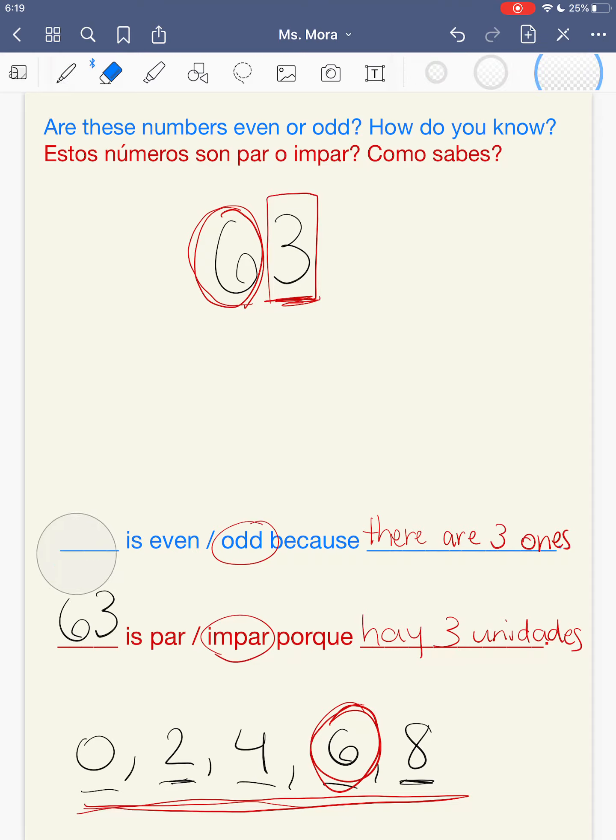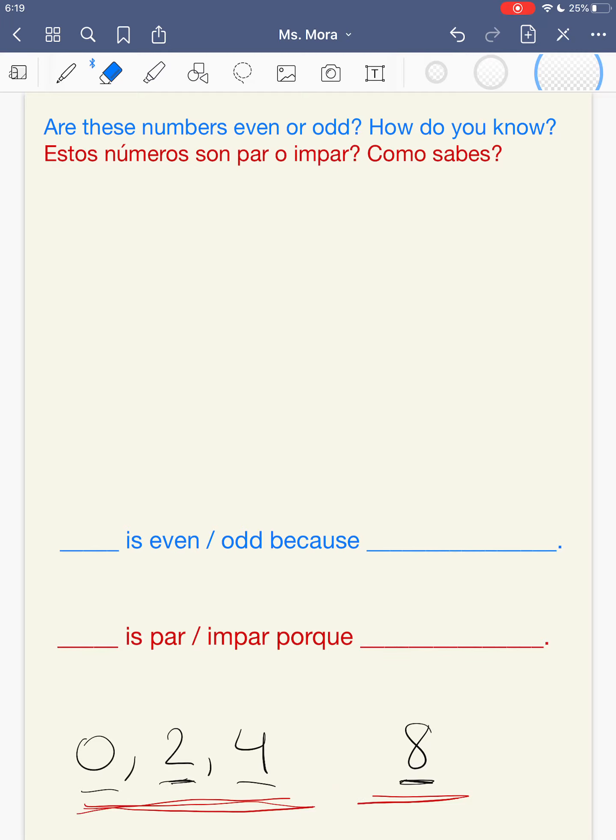So try this one out. This one you're going to do by yourself. Pause the video. And your number to try is 76. So fill in the blanks. 76 is even or odd. Because. And tell me how you know. Pause the video and then come back when you're done. Aquí dice 76 es par o impar. Y me vas a decir por qué. Pause la video y cuando termines de escribirlo regresas para revisar tu trabajo.